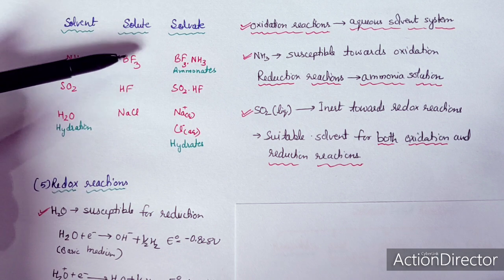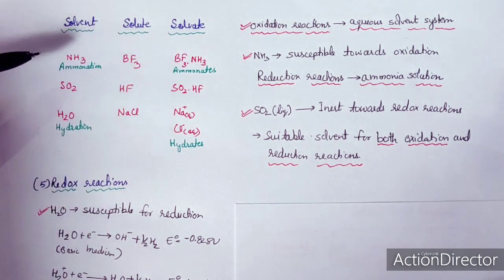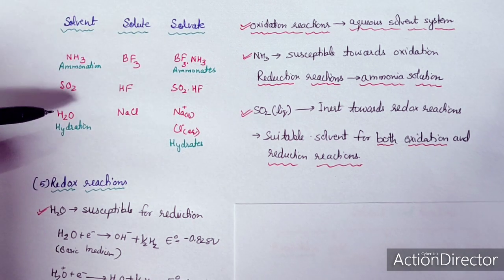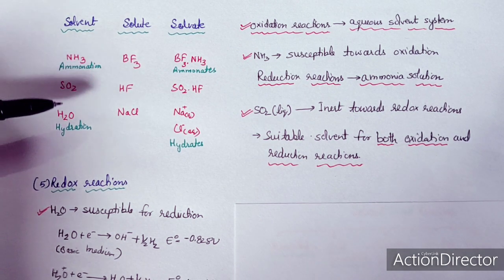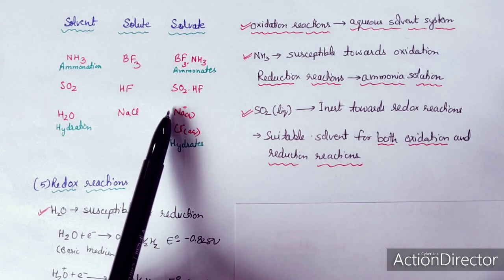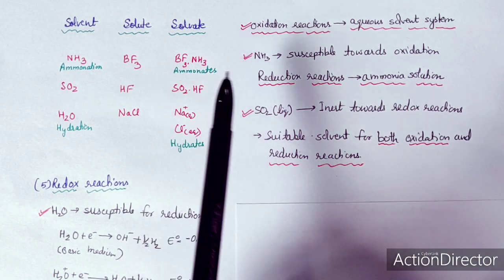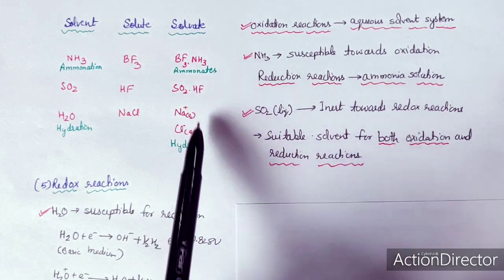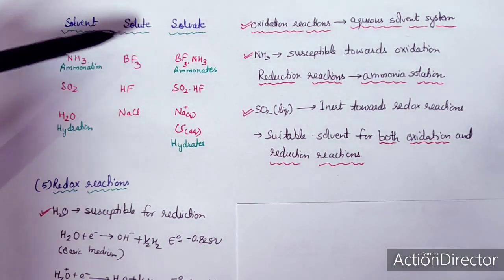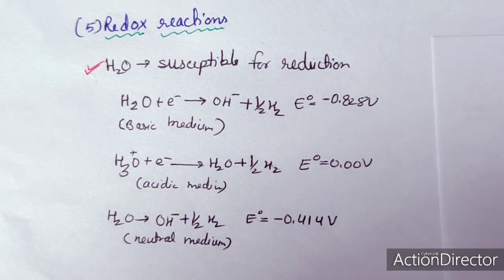For example, NaCl in water: Na+ undergoes hydration and Cl− undergoes hydration. SO2 with HF forms a solvate. BF3 and NH3 mixed together form solvates, also called adducts. Solvation depends on the solvent: if ammonia is present, it is ammonation; if water is present, it is hydration.